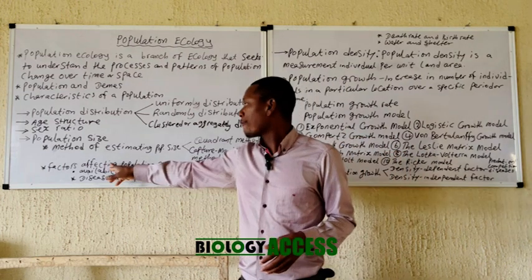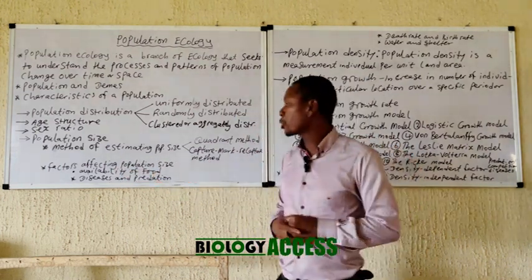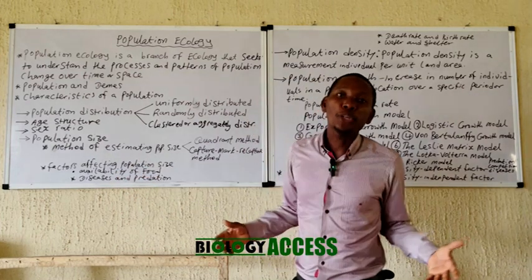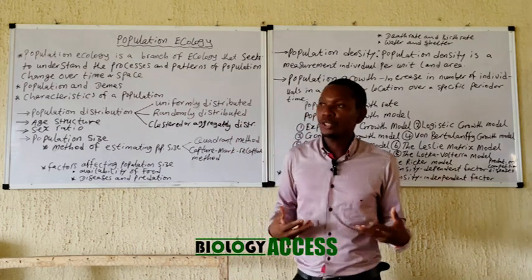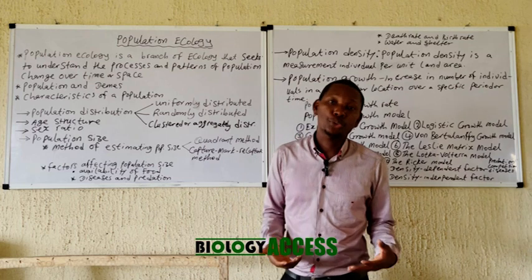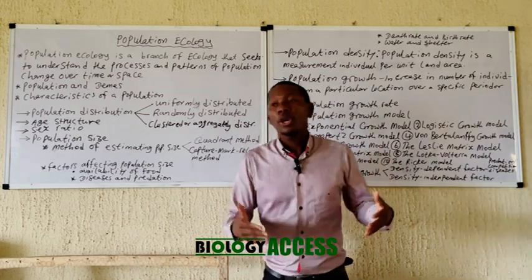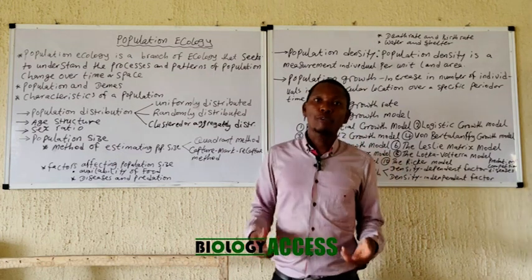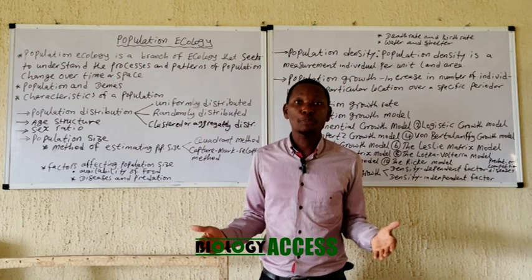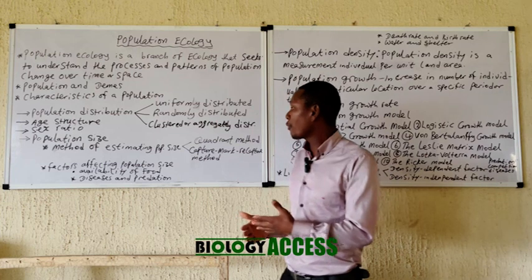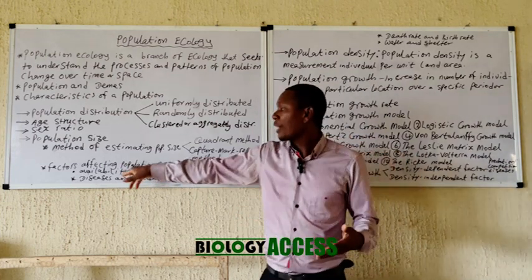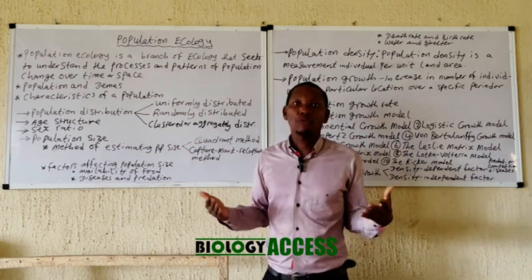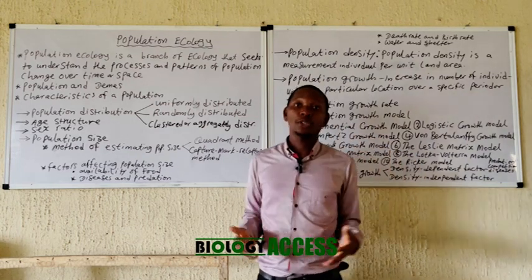Factors affecting population size: availability of food is one factor. If you have enough food, there are enough nutrients, and organisms have enough energy to mate and reproduce. For plants, if there are enough available nutrients in the soil, they absorb, grow, and reproduce. Adequate availability of food leads to an increase in population size, while inadequate food availability may lead to a decrease due to competition.